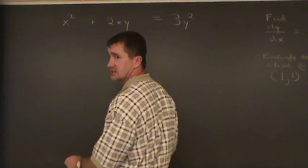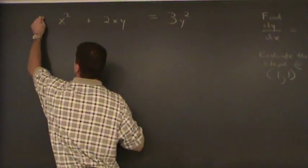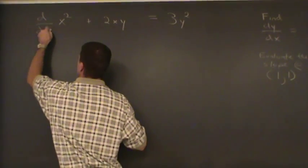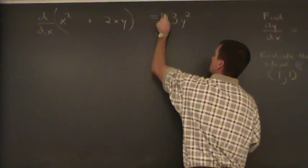We're gonna be able to figure out an equation for the slope of this curve. So to do this, we're gonna differentiate implicitly. That means you differentiate both sides with respect to x.